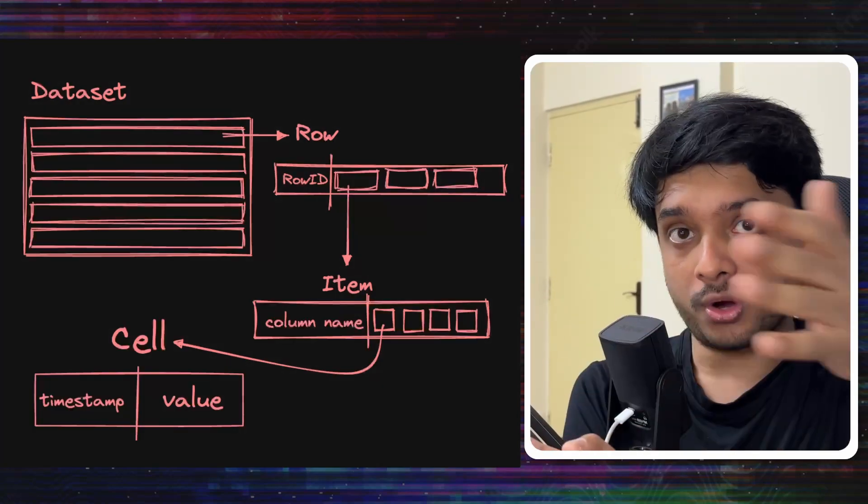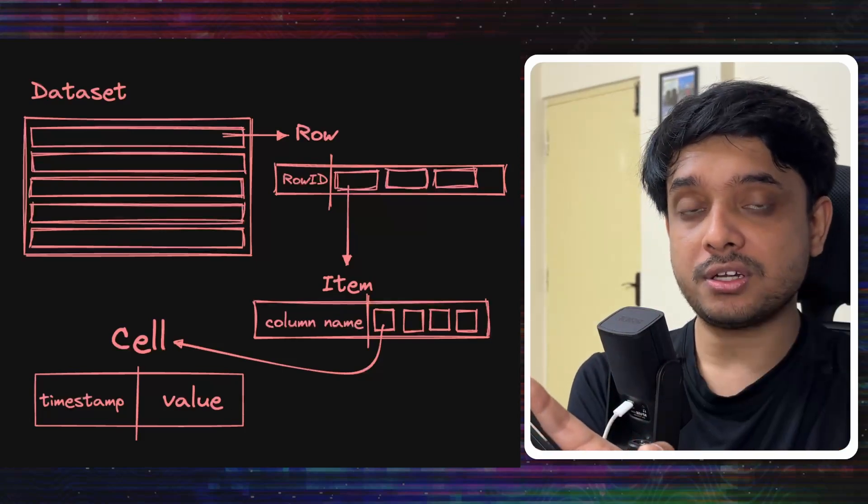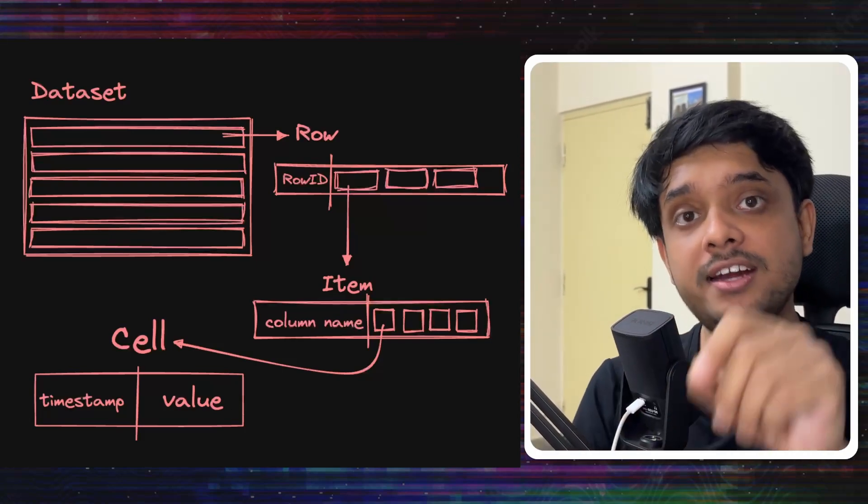So there is row. Each row has a list of items. Each item has the column name and a list of cells and each of the cells has a value and a timestamp.